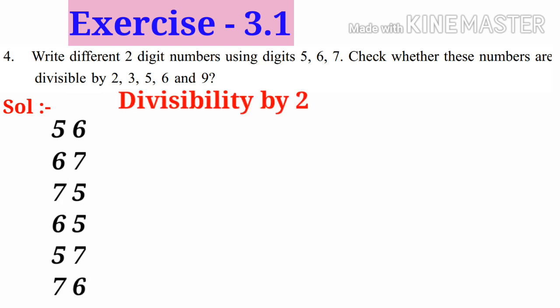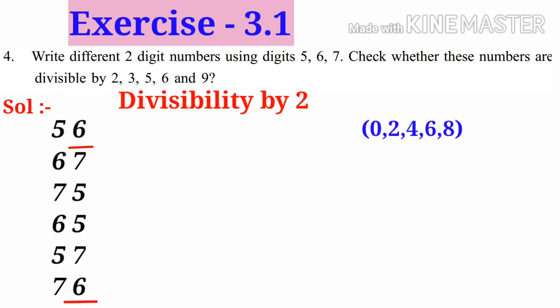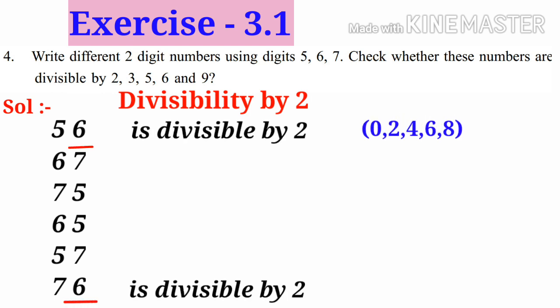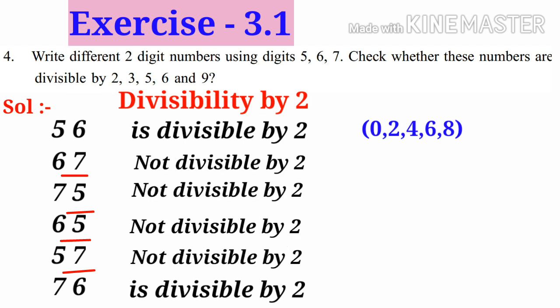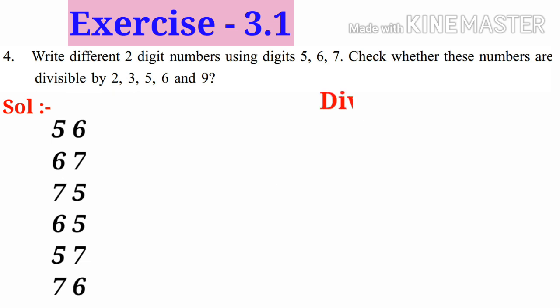Let us check which are divisible by 2. Observe the unit's place digits. The first number 56 and last number 76 have 6 in their unit's place, so these numbers are divisible by 2. The remaining numbers are not divisible by 2 because they do not have 0, 2, 4, 6, or 8 in their one's place.